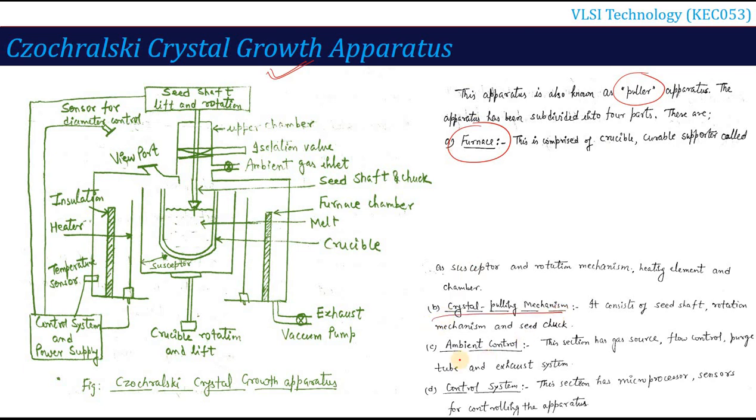What are the 4 parts? Furnace, Crystal Pulling Mechanism, Ambient Control, and the Control System. So if I talk first about Furnace. Furnace, what is Furnace? If you see here, there is a square box type here, this is basically Furnace portion. First of all, you have to put that part in which you have to put EGS. So that is our crucible. That is the crucible to support this one.